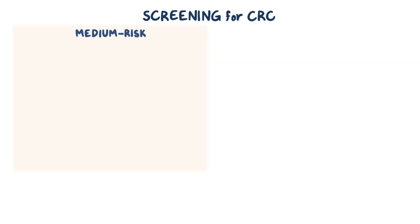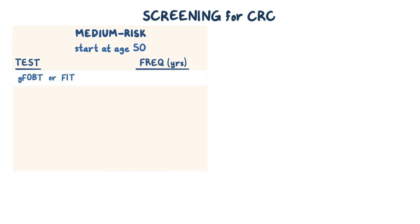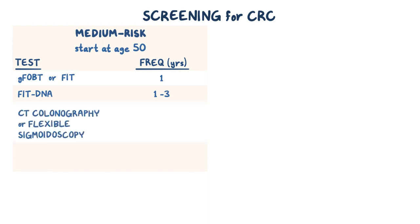How we screen for CRC depends on risk and which method is used. For medium risk individuals, one option is to do annual screening starting at age 50 with GFOBT or FIT. If FIT DNA is used, screening can be done every 1-3 years. CT colonography or flexible sigmoidoscopy should be done every 5 years, while colonoscopy, which is the best screening test, should be done every 10 years.